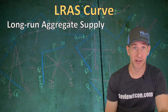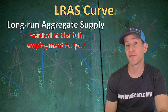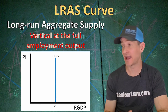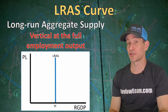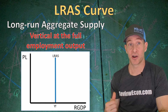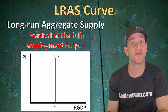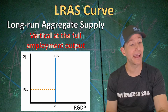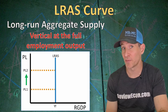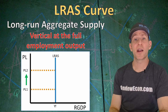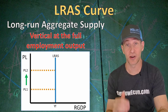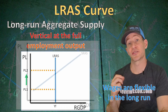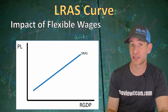Next, we're going to talk about the long run aggregate supply curve. The long run aggregate supply curve is vertical at the full employment level of output. On the graph, we have the price level on the y-axis and real GDP on the x-axis, with a vertical curve labeled LRAS and YF on the x-axis below. Y stands for national income and the F means full employment. At both low and high price levels, we are going to have the full employment level of output in the long run. The reason is because wages are flexible in the long run.